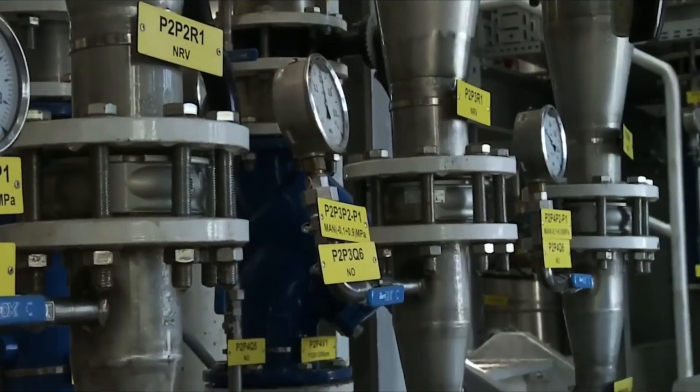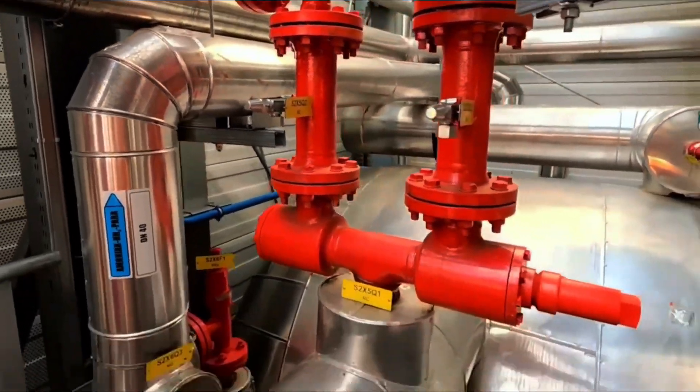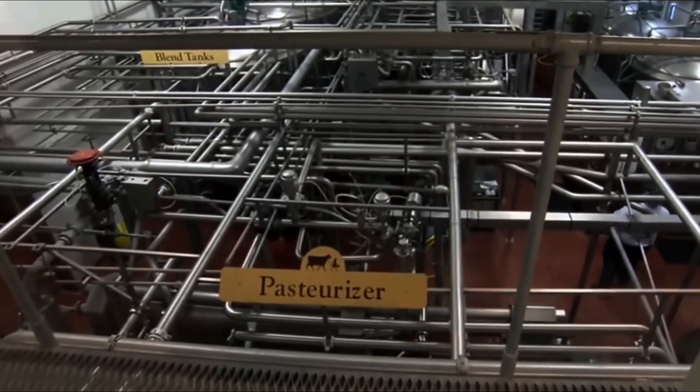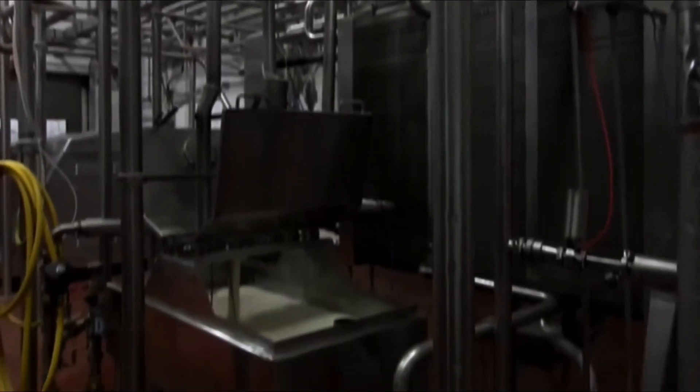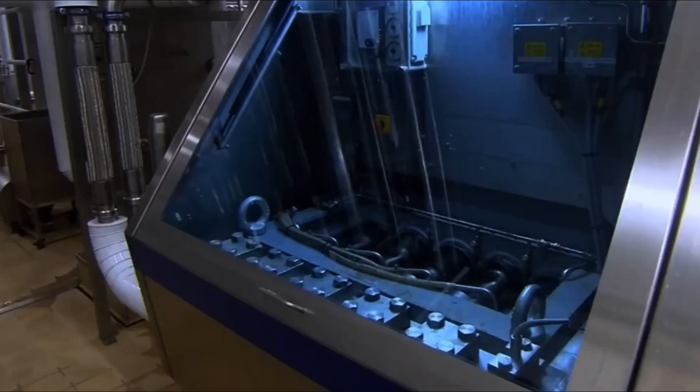Now the mix is given time to rest. Yes, literally. In refrigerated aging tanks, it sits for 4 to 12 hours. This stage is called aging. But what exactly happens during this time? First, the stabilizers and emulsifiers become fully activated and evenly distributed. Second, the fat begins to crystallize, creating a smooth, even structure. Most importantly, the mix thickens, gains body, and becomes fully prepared for the magic of freezing.